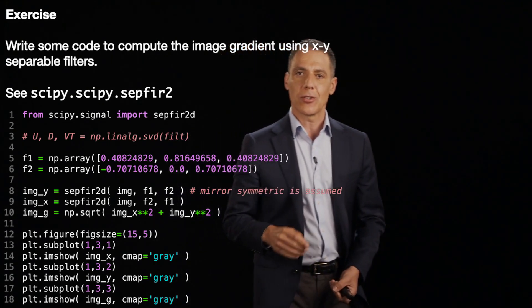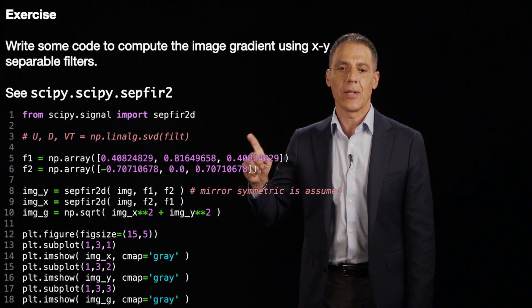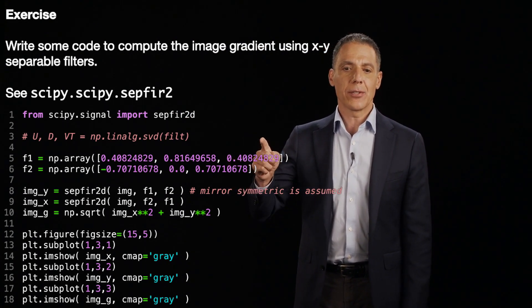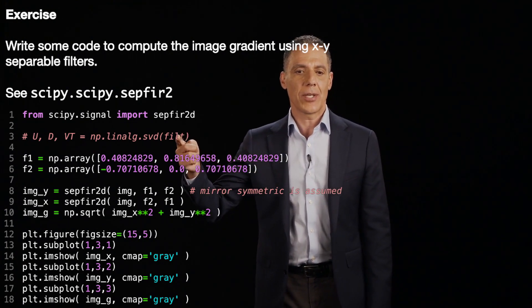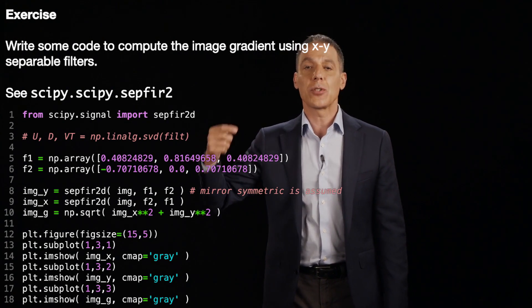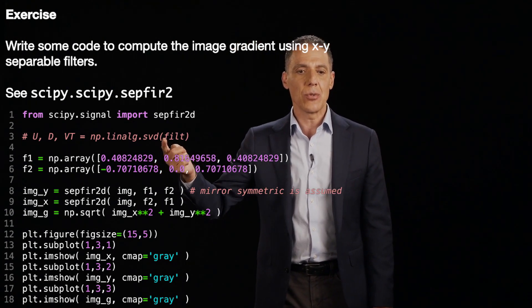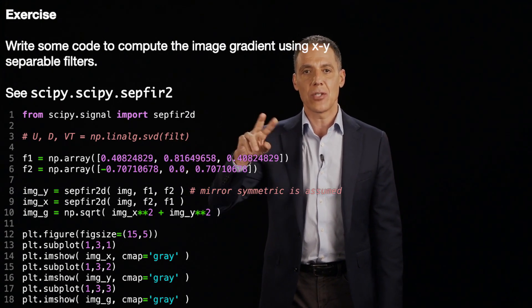Alright, let's see what the solution looks like. So again, I'm going to import SEP FIR. Here, sorry, here's the step. I've actually commented it out because every time I ran this, I didn't want to have to run the SVD. So here's the step that takes the filter from the previous exercise, that was the three by three filter, and computes U, D, as I called it here, and VT. So that's the U and the V.